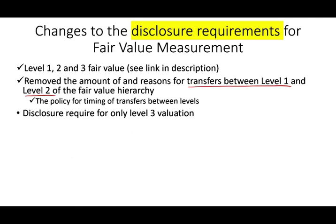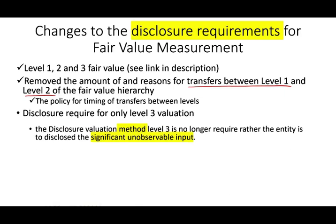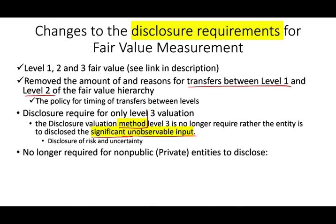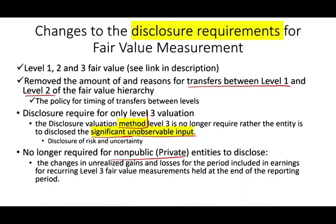The disclosure of the valuation method for level three is no longer required. All you have to do now is disclose the significant unobservable inputs — basically, tell us the risk and uncertainty in determining level three fair market value. Also for non-public, which is private companies, they no longer require the changes in unrealized gains and losses for the period included in earnings for recurring level three fair value measurements held at the end of the reporting period.